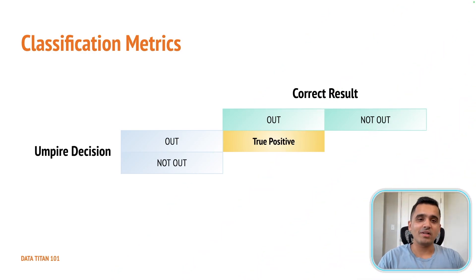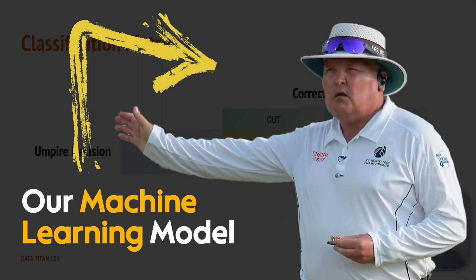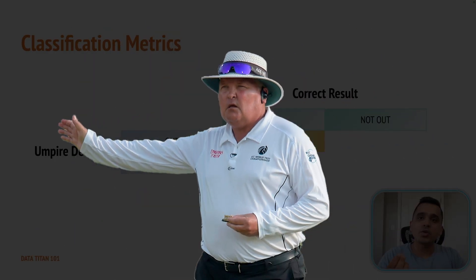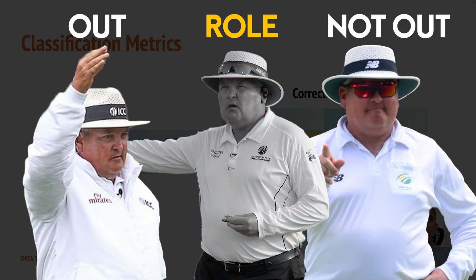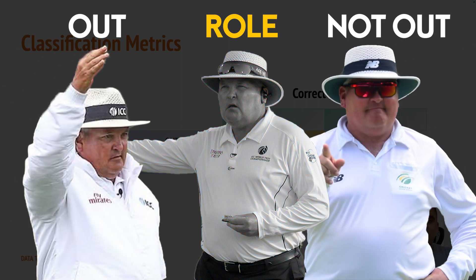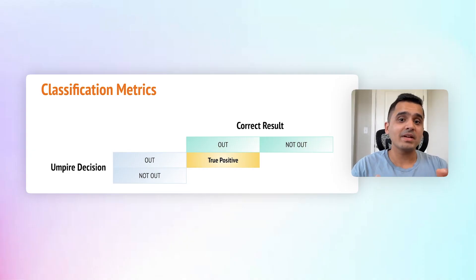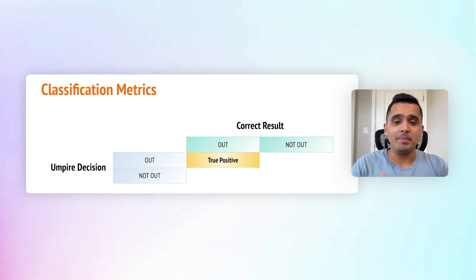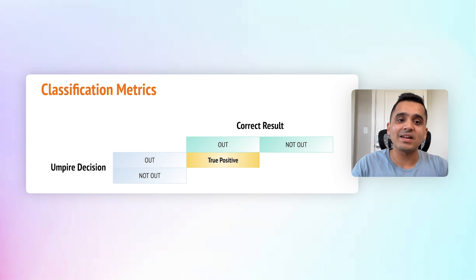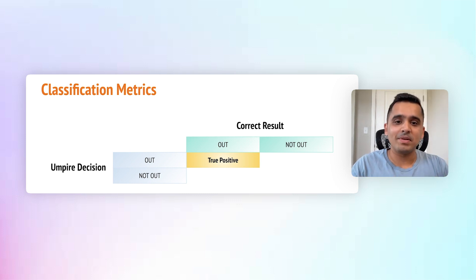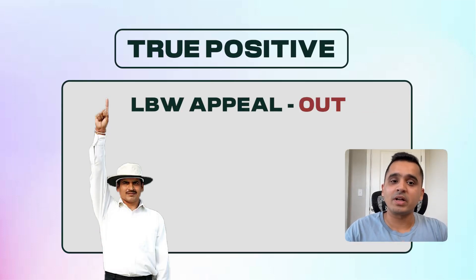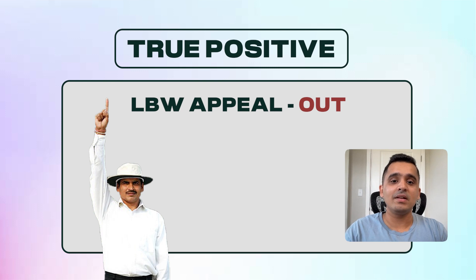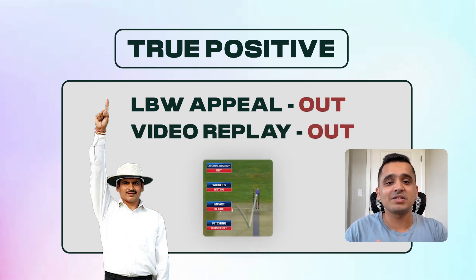Imagine your machine learning model is an umpire in a cricket match, and its role is to decide out and not out for leg before wicket calls. Jumping right in, a true positive is when your model, the umpire, correctly calls a player out and they're actually out. For example, an umpire gives out on an LBW appeal, and the DRS video replay also reveals that the ball is hitting the stumps.